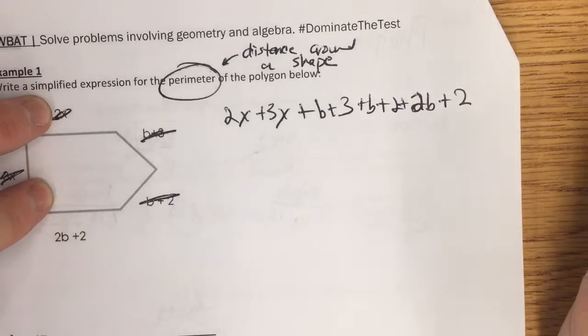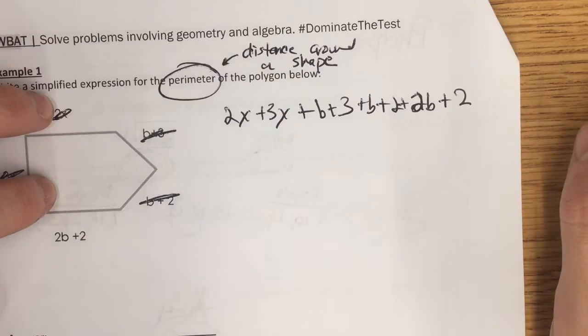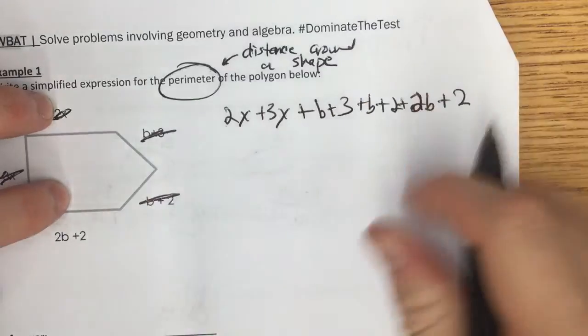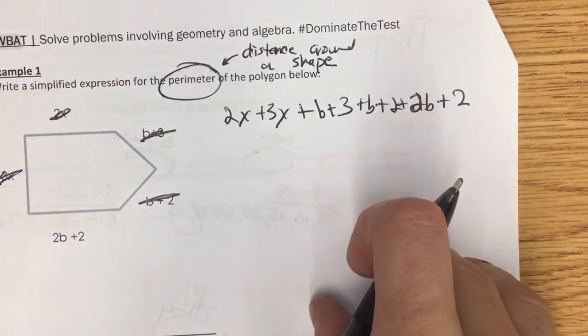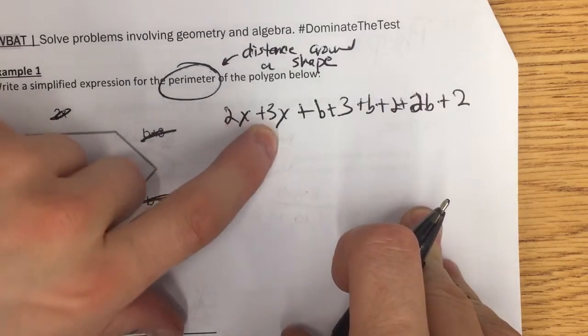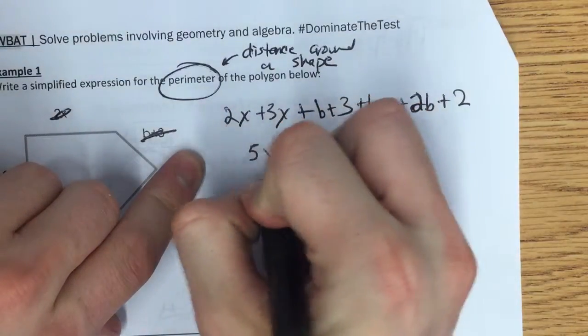Now it said a simplified expression, so I've got to find like terms that I can combine. Here I have 2x and 3x. If they have the exact same variable and the exact same exponent, I can combine them. So 2x plus 3x, that gives us 5x.